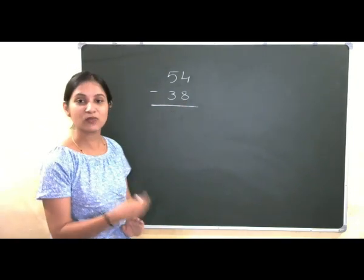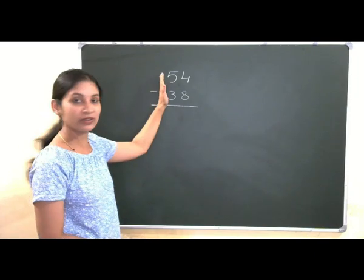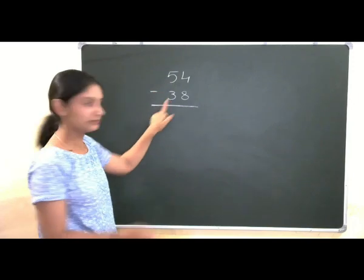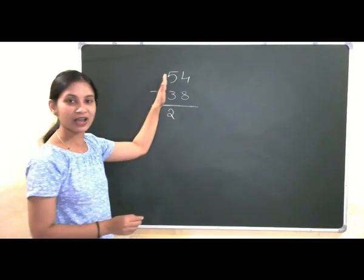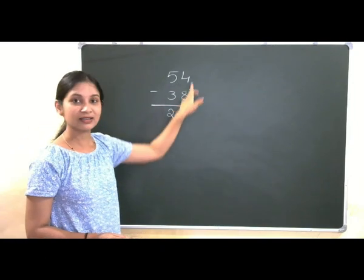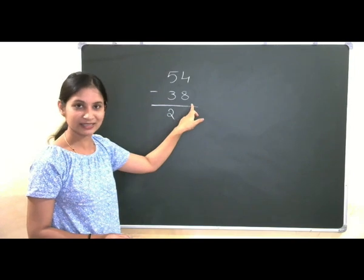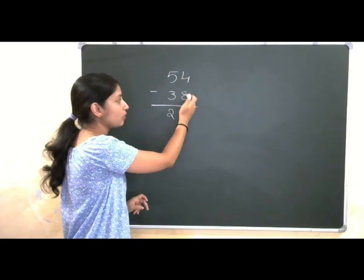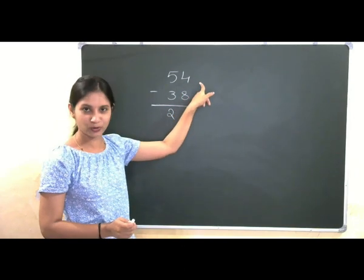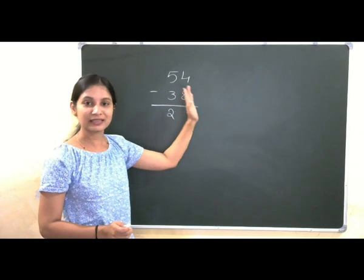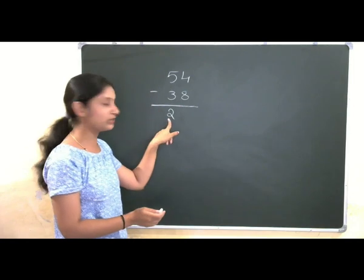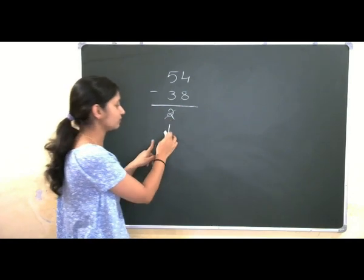So, let us solve using one more trick that is Base complement method. First, we need to start from left side. 5 minus 3 is 2. The first step is 5 minus 3. We need to write 2. Now, we need to check whether the next set is we can subtract from the above number. No, we can't subtract 8 from 4. So, if you get this then you need to decrease 1 only from this number. That is 2 minus 1 gives you 1.